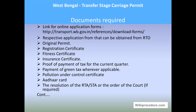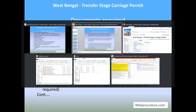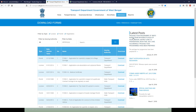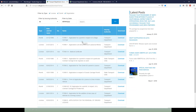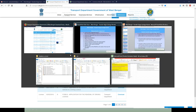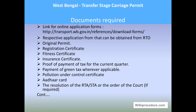Documents required. The first link provided here will help you in reaching the forms related to permits in West Bengal. This page is provided from the West Bengal State Transport Portal, so download the respective form which is required for applying. Respective application forms can also be obtained from the RTO.